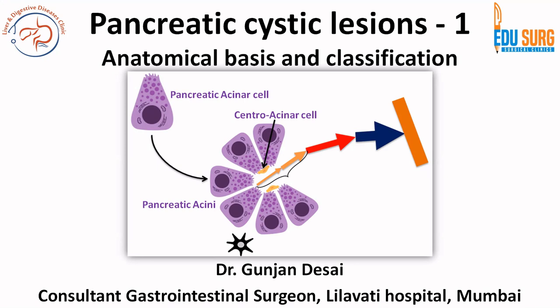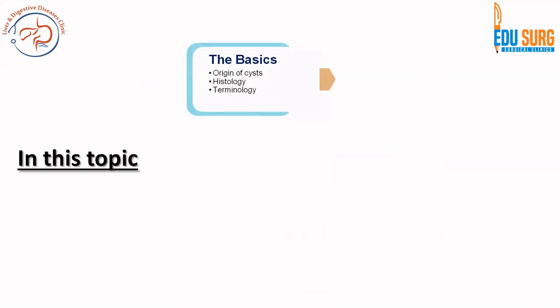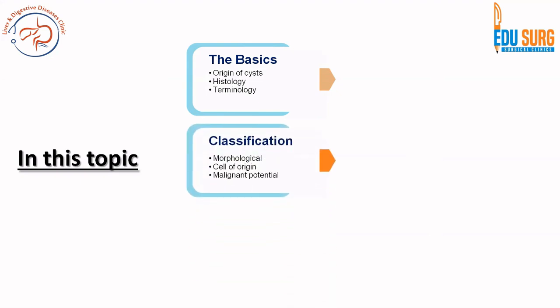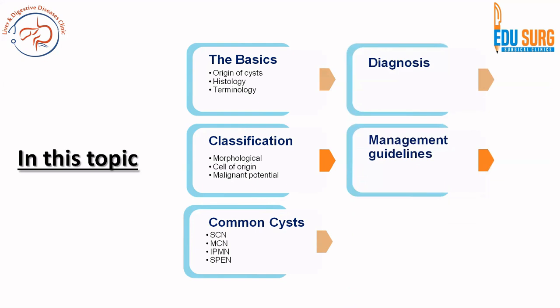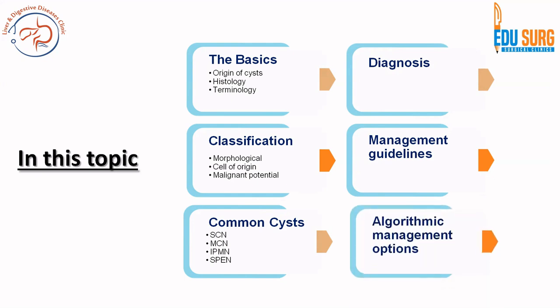We have divided it into some specific parts so as to make it easier to understand and grasp for life. Today we are going to discuss the anatomical and physiological basis and a classification based on the anatomy of the pancreas. In this topic overall we are going to see the basics: the origin of cysts, the cell from which it arises in the pancreas, and the relevant terminology. We will see the different classifications of pancreatic cystic lesions — morphological, based on cell of origin, as well as malignant potential. We will discuss the common cysts seen in practice, how to manage them, and look at the guidelines. There are more than 10 guidelines on this topic, but we are going to simplify it based on practical points and build your own algorithm of management that helps you in practice.